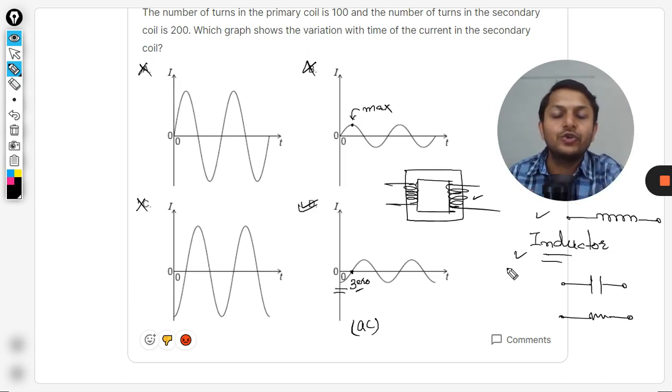Thereby creating a phase difference of π by 2, 90 degrees. So phase difference of π by 2 comes into position and that is why the graph of D will be correct. So B is wrong, graph of D is correct.